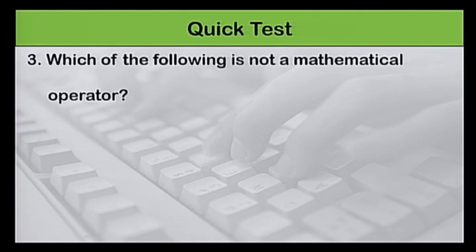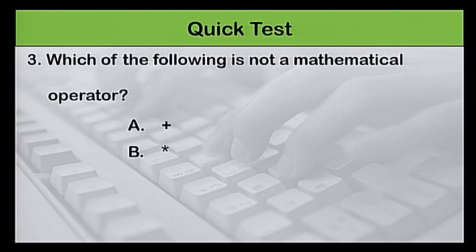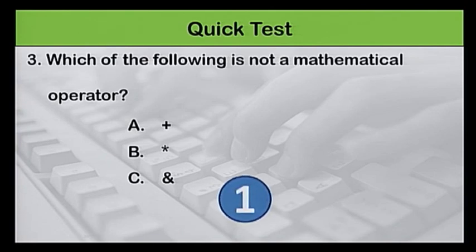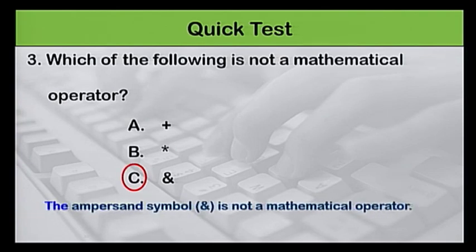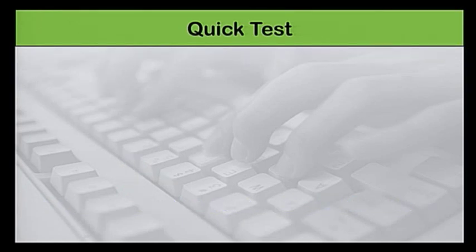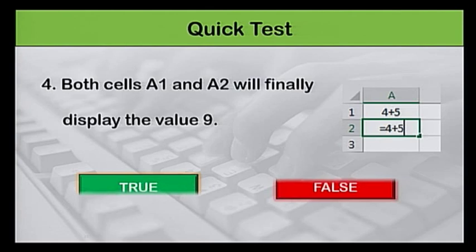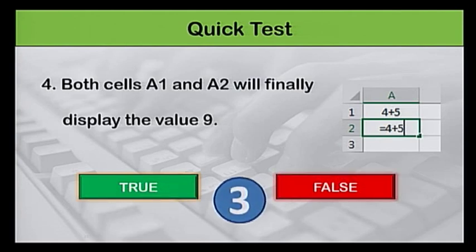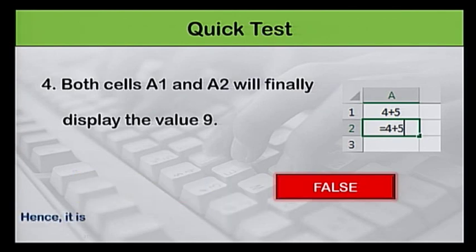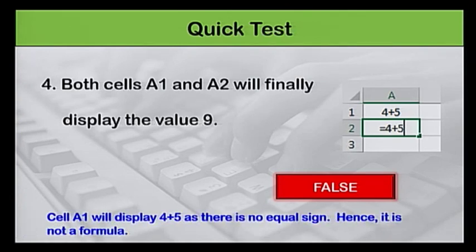Question 3: Which of the following is not a mathematical operator? A — plus symbol, B — asterisk symbol, C — ampersand symbol. The answer is C. The ampersand symbol is not a mathematical operator. Question 4: Both cells A1 and A2 will finally display the value 9 — is it true or false? The answer is false, as cell A1 will display 4 plus 5 as there is no equal sign, hence it is not a formula.